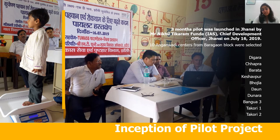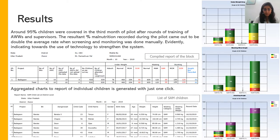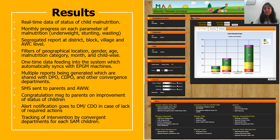This system was piloted in ten Aanganwadi centers selected in Baragaon block of Jhansi for three months. Three rounds of training and on-ground testing were conducted with the support of Neetiraj Engineering Limited and Tumas Foundation. Aanganwadi workers were able to operate the machines very easily and said it made their process much easier. In the third month, coverage of 95% of children was achieved, and the percentage malnutrition recorded during the pilot came out to be double the average rate when screening was done manually, indicative of maximized reach and accuracy. All aggregated charts and reports of individual children were available in just one click. The dashboard gives real-time data on all three indicators segregated at all levels with filters of age, sex, month, location, etc.